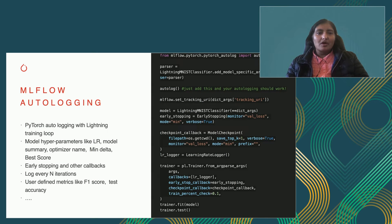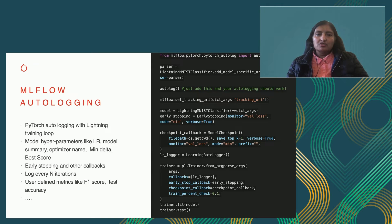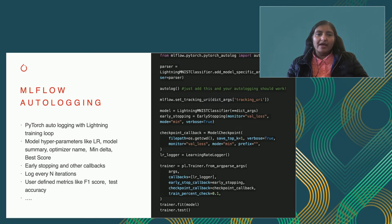The MLflow auto-logging feature has been implemented using the PyTorch Lightning training loop. All you have to do is import the auto-logging module, write your training loop script as usual, and call a single line — auto-log — which will log the parameters by default. It logs things like hyperparameters for learning rate, model summary, optimizer name, best score, and delta. You can control callbacks like the early stopping callback, log for every N iterations, and also have user-defined metrics like F1 score or test accuracy.